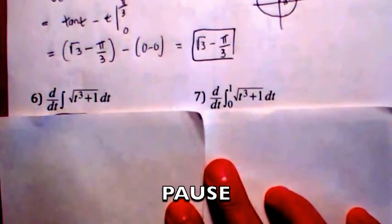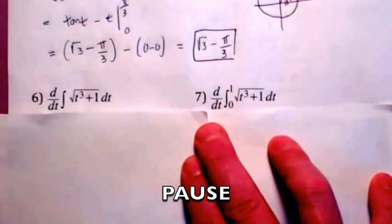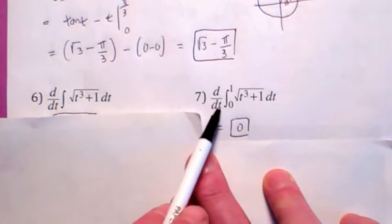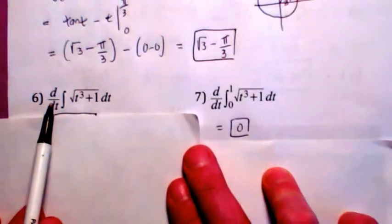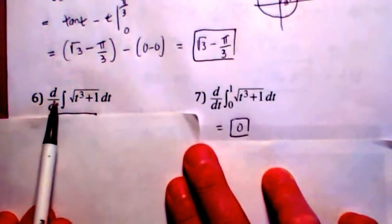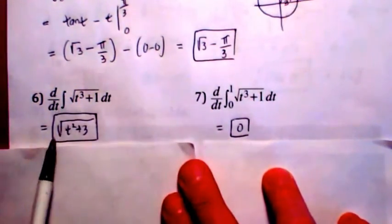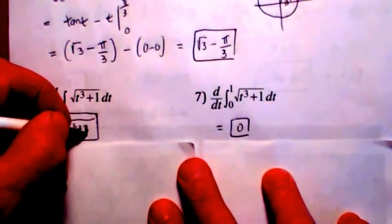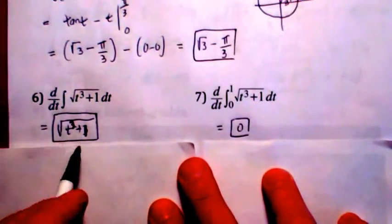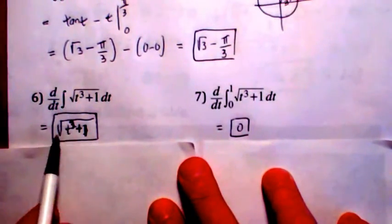See if you can do these two problems. Did you get 0 for the second one? Because it's the derivative of a number. This is the derivative of an antiderivative — even though we're not sure what the antiderivative is, when you take the derivative of an antiderivative, you get back what you started with. So the answer should be the square root of t cubed plus 1.